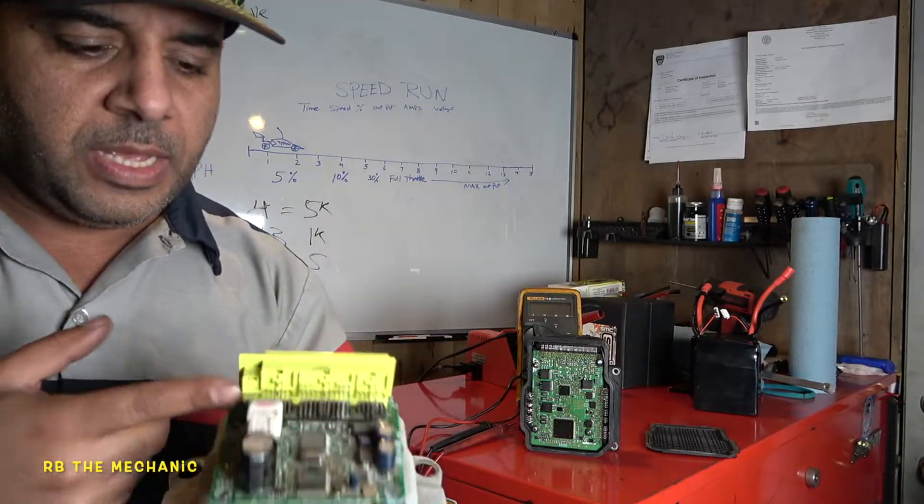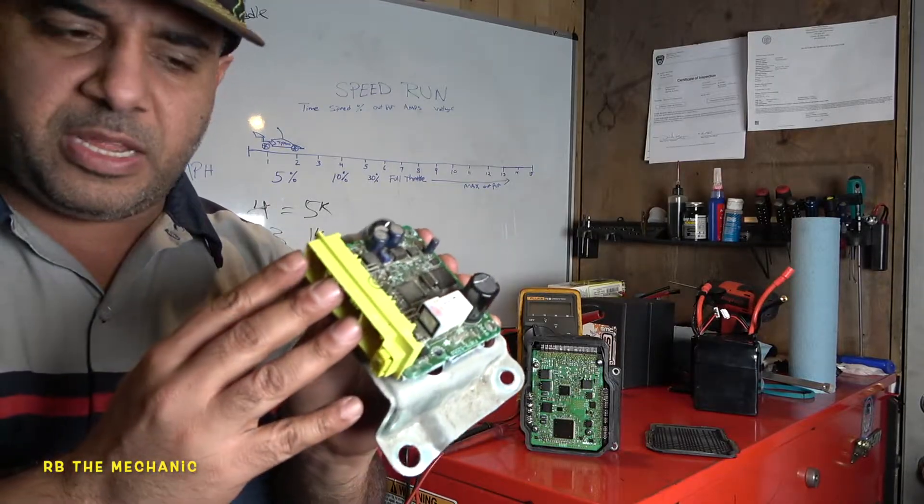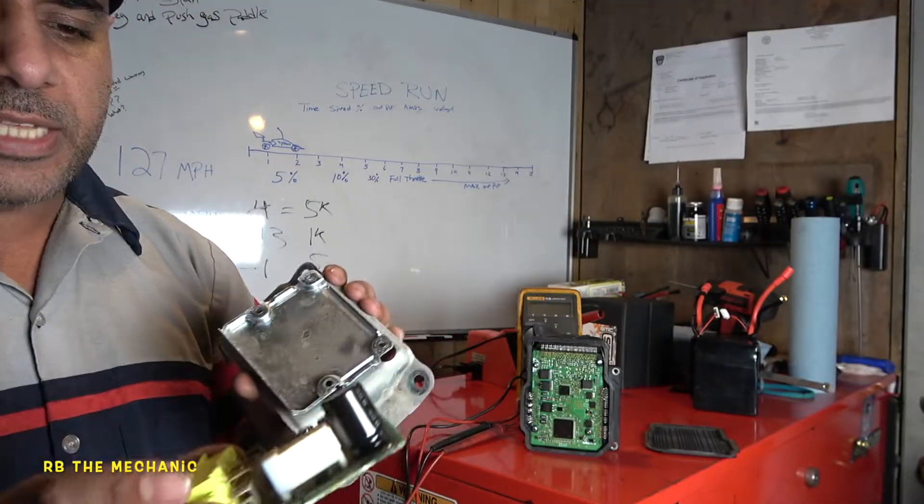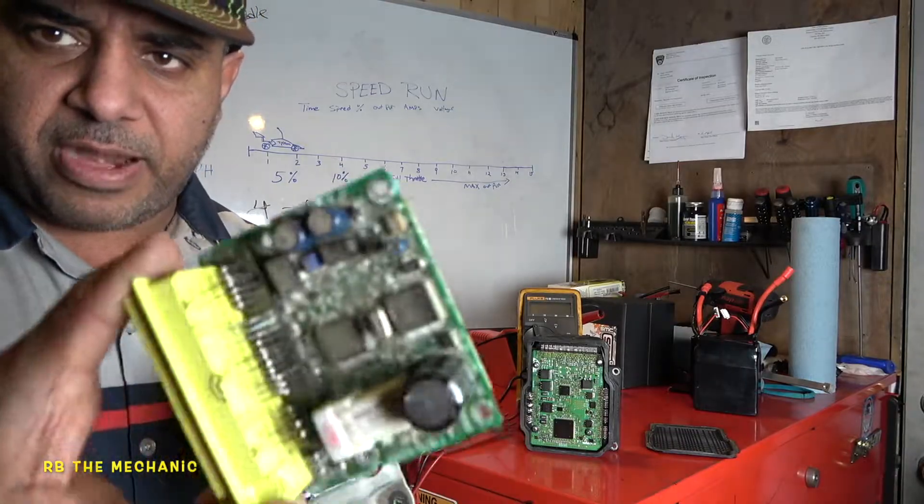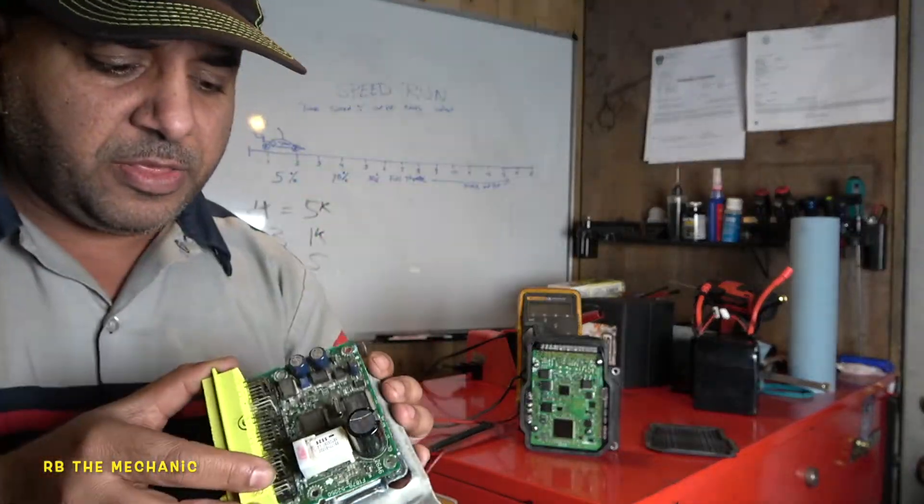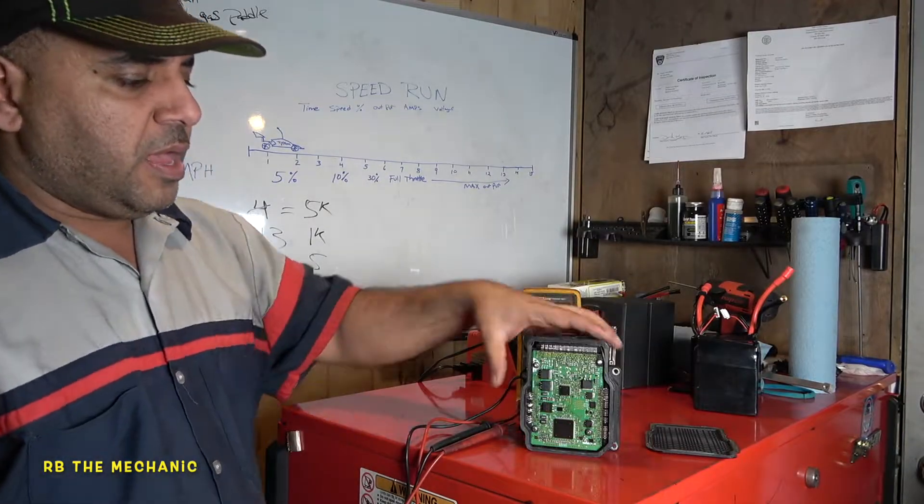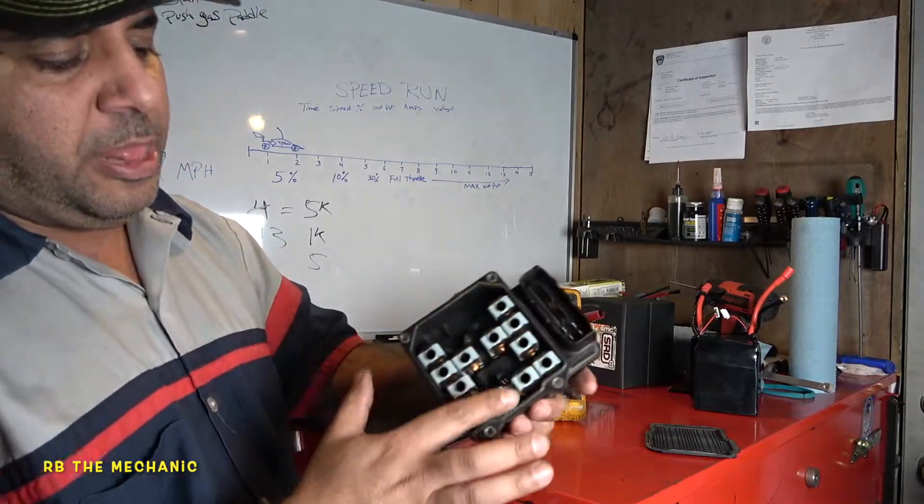Look at the difference here. This actually, you connect your connector here and that is connected. Let's take this apart. It's actually connected to your circuit board itself. Direct connection. Direct connection. There's no small tiny cables going to it.